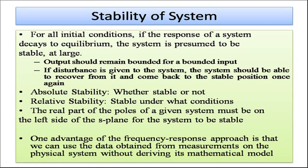If a disturbance is given, the system should recover and return to a stable position. Absolute stability is a clear yes-or-no condition. Relative stability refers to the conditions under which a system is stable. The real part of the poles of a given system must be on the left side of the s-plane for the system to be stable, as discussed in the previous video.